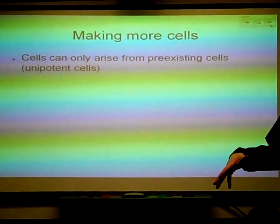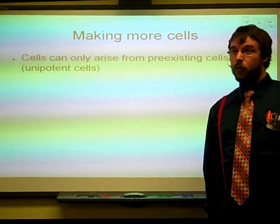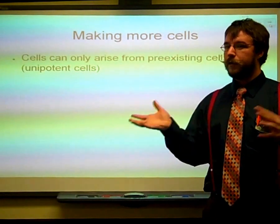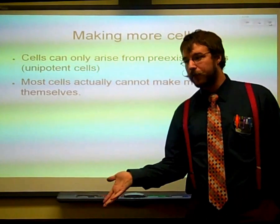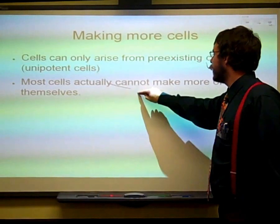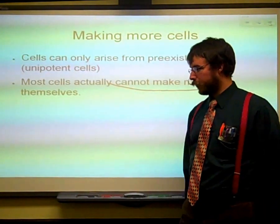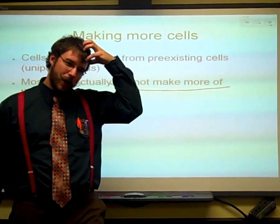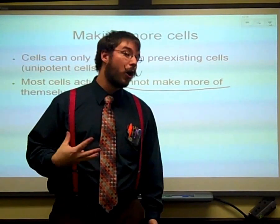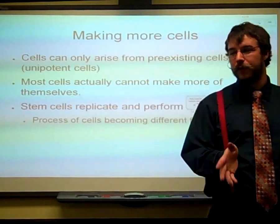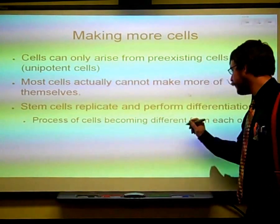First, cells are only made from pre-existing cells. A cell makes a new cell, so you'd think it's going to be the same type of cell — my liver cells, when they reproduce, are going to make liver cells. But the weird thing is that most cells actually cannot make more of themselves. Your brain cells, your heart cells — they're too busy doing their job to be dividing. So not all cells can make new cells, and the process of cells becoming different types is called differentiation.